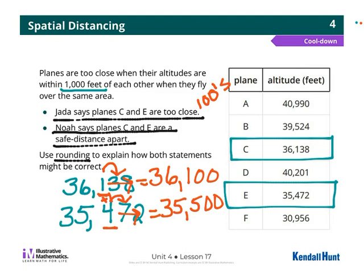Noah says planes C and E are a safe distance apart. Well, we kind of just showed that if he rounded to the thousands place, they would be exactly a thousand feet apart.